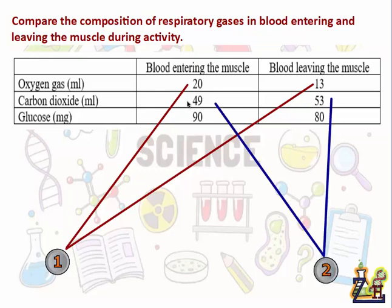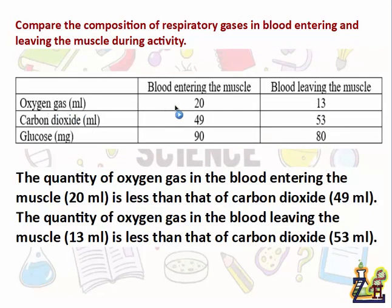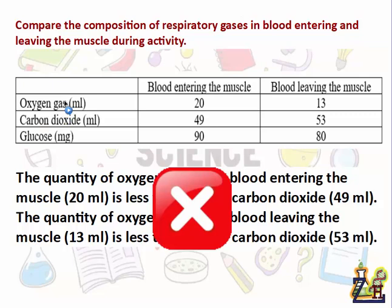Here is a suggested but incorrect answer: the quantity of oxygen gas in the blood entering the muscle, 20 millilitres, is less than that in the carbon dioxide, which is 49 millilitres. This comparison is not correct because we have no benefit from comparing oxygen gas to carbon dioxide. We can't compare between them — this comparison makes no sense and will lead us to nothing. We don't compare oxygen gas to carbon dioxide.